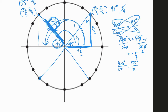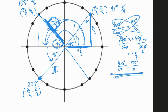Down here in the third quadrant, I'm at 180 degrees plus 45 more, so this is 225 degrees. The ordered pair is going to be very similar except both values are negative because we're in the third quadrant: (−√2/2, −√2/2). Doing the radian conversion, prove to yourself that this is 5π/4.